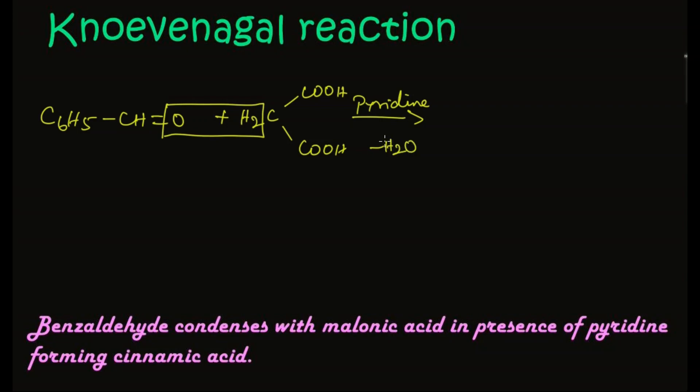We get an intermediate compound - an unsaturated dicarboxylic acid. On further heating, this intermediate releases carbon dioxide.